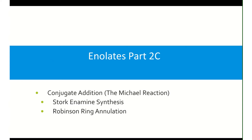Hi there again. We're going to look at enolates — this is part 2c, covering conjugate addition, also known as the Michael addition or Michael reaction. One of the main areas we'll focus on is the Stork enamine and the Robinson ring annulation. But before that, I'll explain exactly what conjugate addition is.